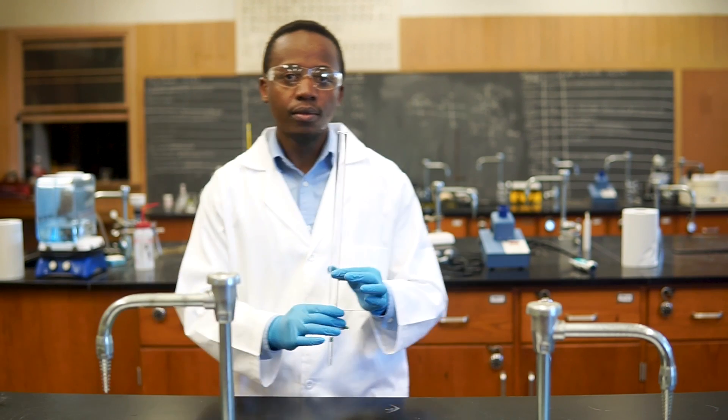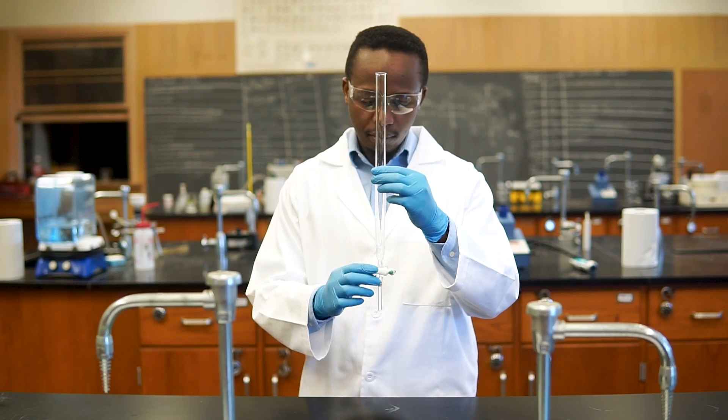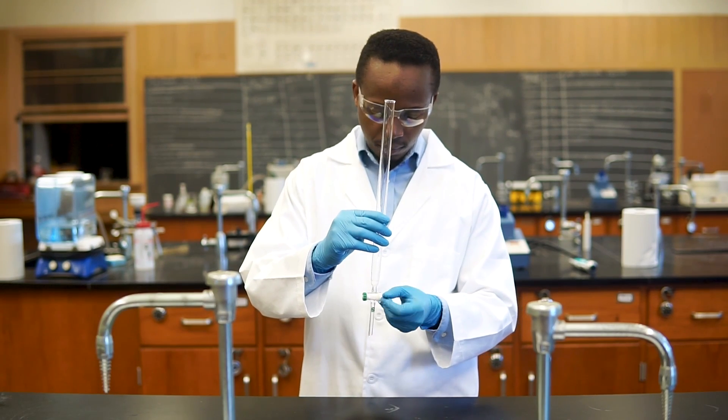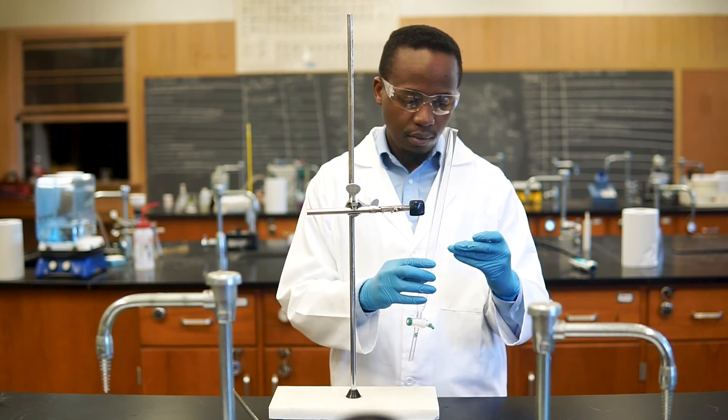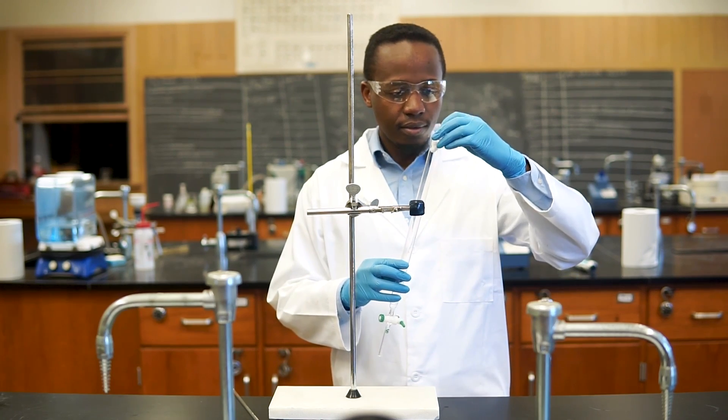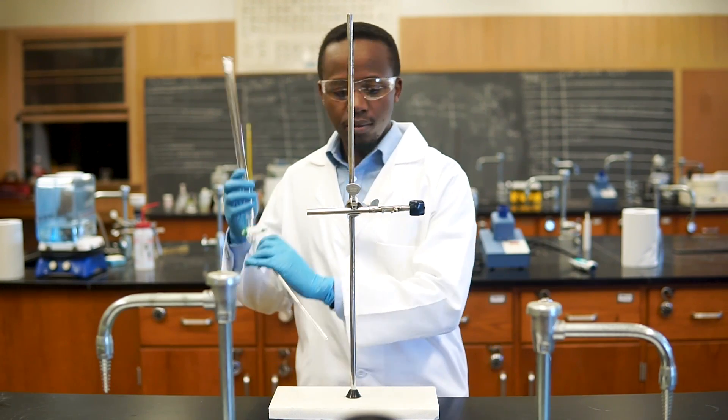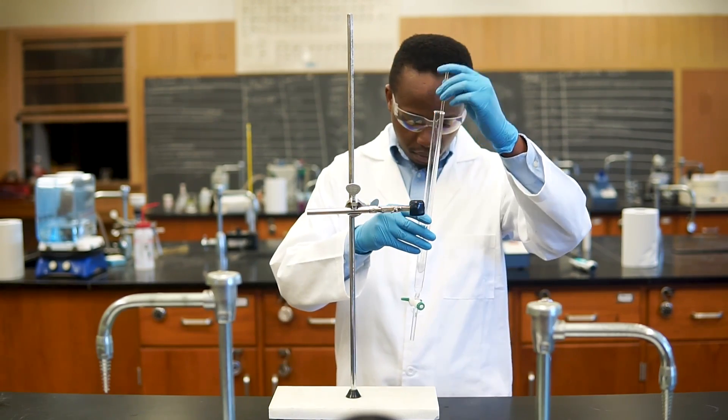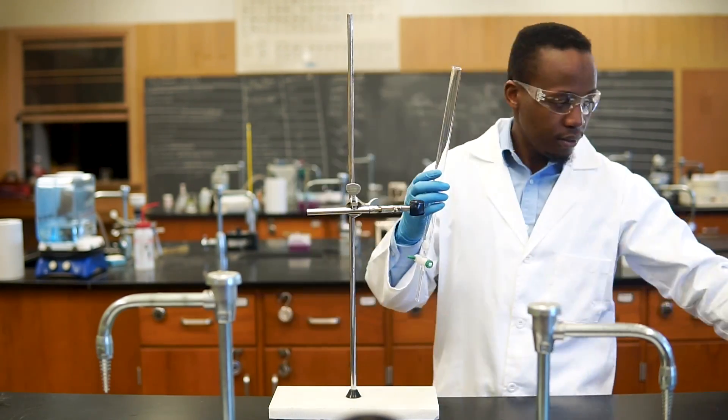Now it's time to perform the technique. We'll start by packing our glass column. As you can see, the column has a stopcock at the bottom, so make sure it's closed. We'll then add a cotton ball to the bottom. This is so that our gel doesn't go through, as it is a fine powder and can easily slip through when we open the stopcock. Using a glass rod like this one, we'll push the cotton down like this.